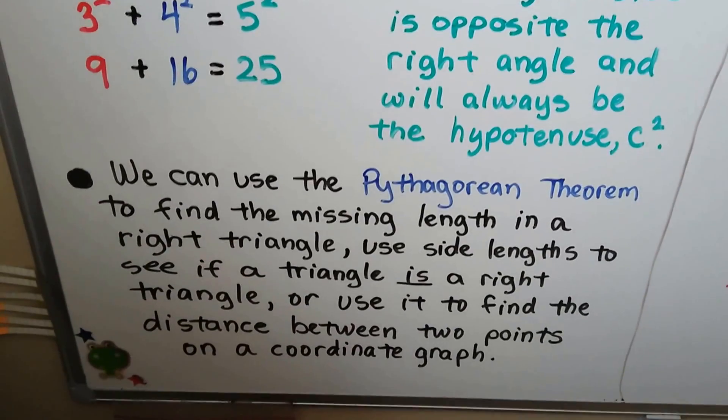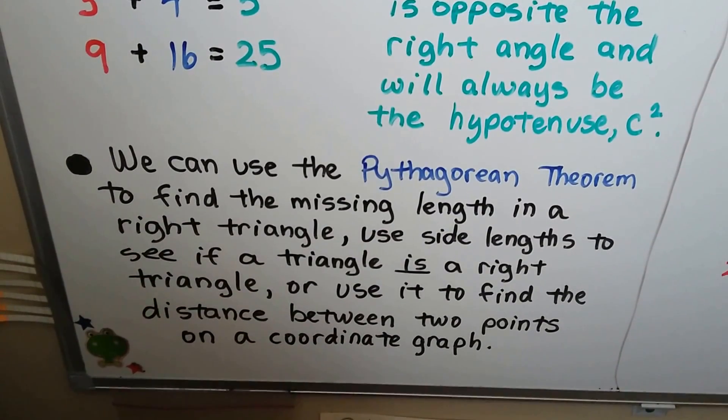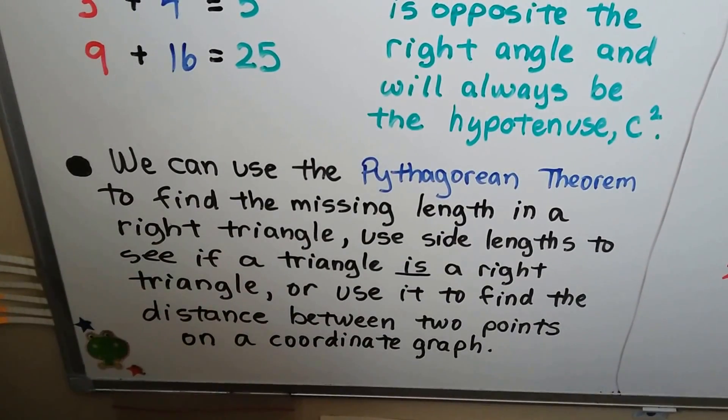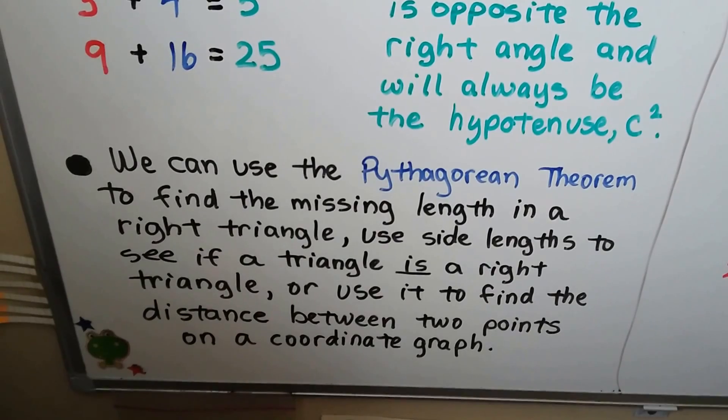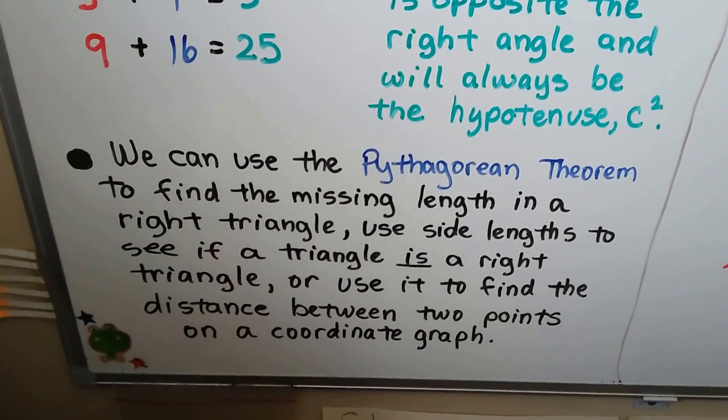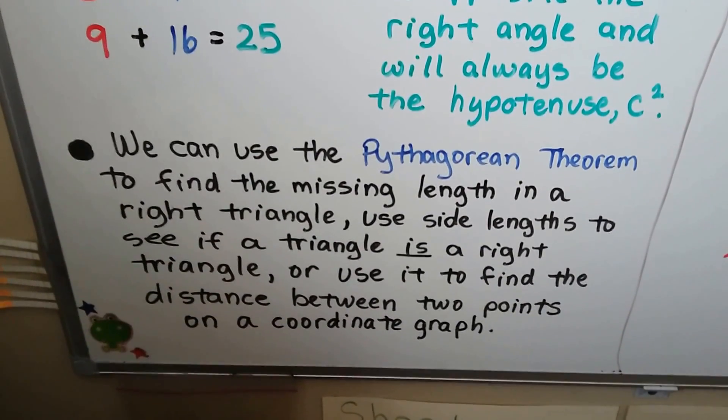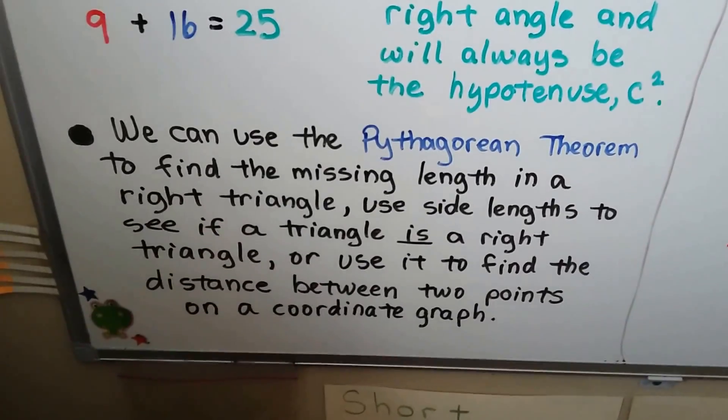And we can use the Pythagorean theorem to find the missing length in a right triangle, use side lengths to see if a triangle is a right triangle, or we can use it to find the distance between two points on a coordinate plane.